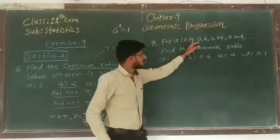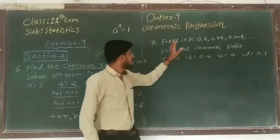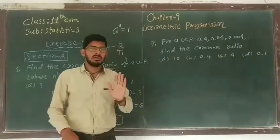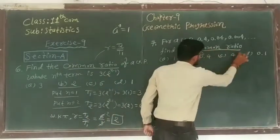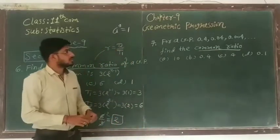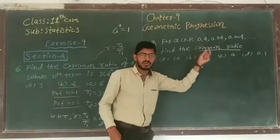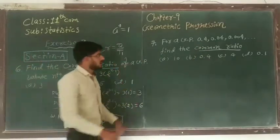Now 7 number. For a GP 0.4, 0.04, 0.004 and so on, find the common ratio. Same question. We have to find the common ratio. Here GP is given. So simply we have to divide 2nd term upon 1st term. No need to find 1st and 2nd term. All terms are given.